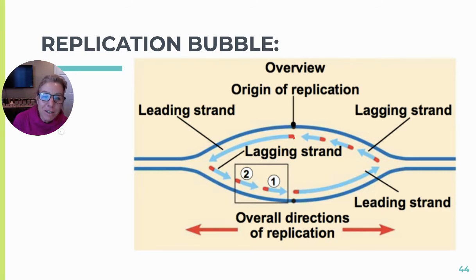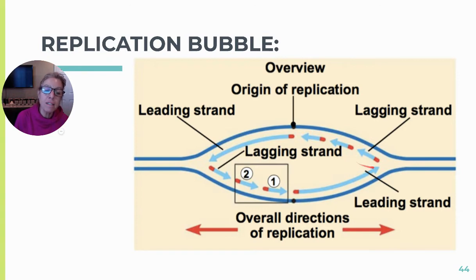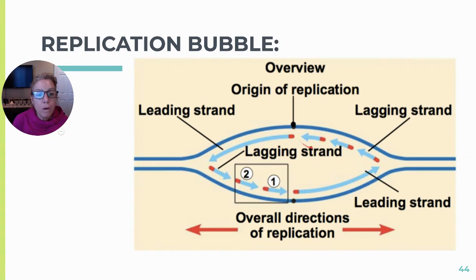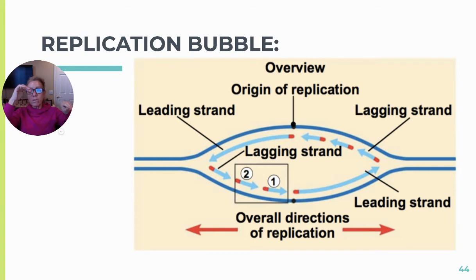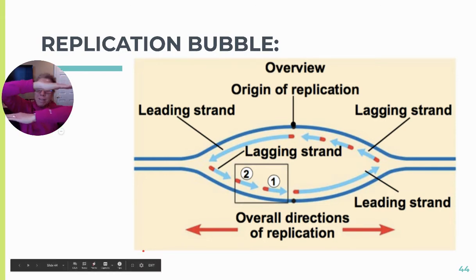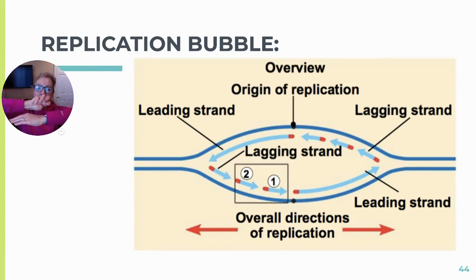RNA primase lays down primer on the lagging strand multiple times as it gets unwound, marking spots so the polymerase can jump back and backstitch again and again. On the leading strand, primer only needs to be laid down once. At the origin of replication, if one strand going one direction is leading, then going the other direction from the same origin is also leading, and the other two would be lagging — crisscrossed from each other.